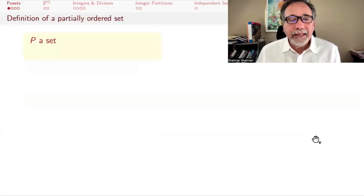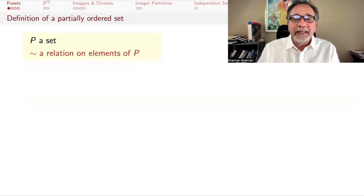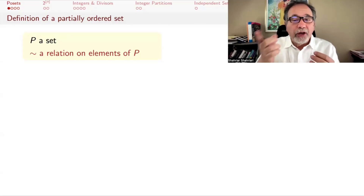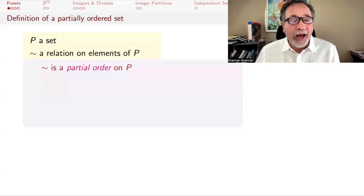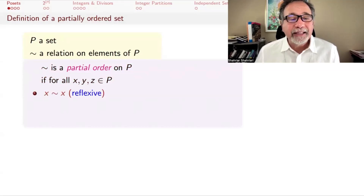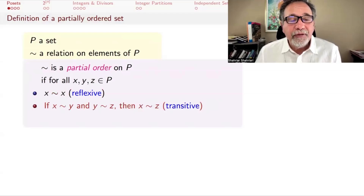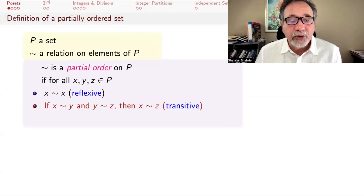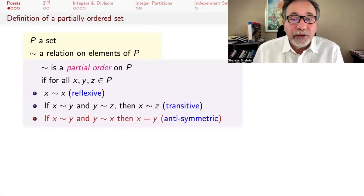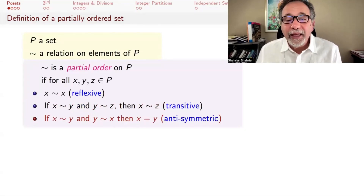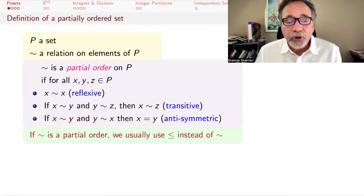So what's the definition of a partially ordered set? If P is a set and you have a relation on elements of P — a relation means that if two elements come in, I will be able to say if one is related to the other, or neither. If you have such a relation, it's called a partial order if: X is related to X (reflexive property); if X is related to Y and Y is related to Z, then X is related to Z (transitive property); and if X is related to Y and Y is related to X, then X equals Y (antisymmetric property).